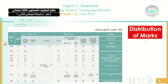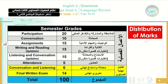Here is the official distribution of marks, just to let you know how you are going to be evaluated. Participation will be given 20 marks. Conversation, 10 marks. Assignments, 15 marks. Writing and reading — the formative assessment — 15 marks. Listening and conversation will be 15 marks. Attendance will also be counted as 5 marks. Conversation and listening in the final exam will be 6 marks, and the final written exam will be out of 14, for a total of 100. This depends on how your own teacher interprets this schedule or chart.